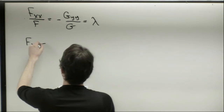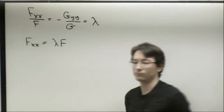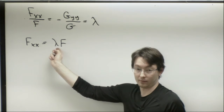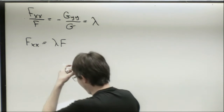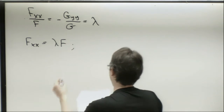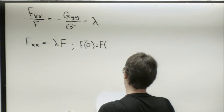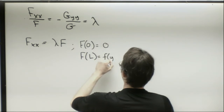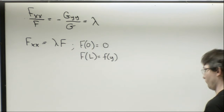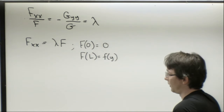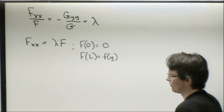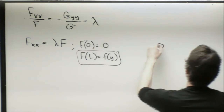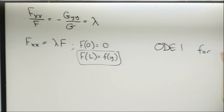We have boundary conditions: F(0) = 0, and F(L) equals some function f(y) — that second one is a bit weird and we'll come back to it. The second ODE is G'' = -λG, with boundary conditions G(0) = G(h) = 0. The G equation is simpler: the y-varying part must be uniformly zero at y=0 and y=h, while F must be zero at x=0 and satisfy the temperature distribution condition at x=L.